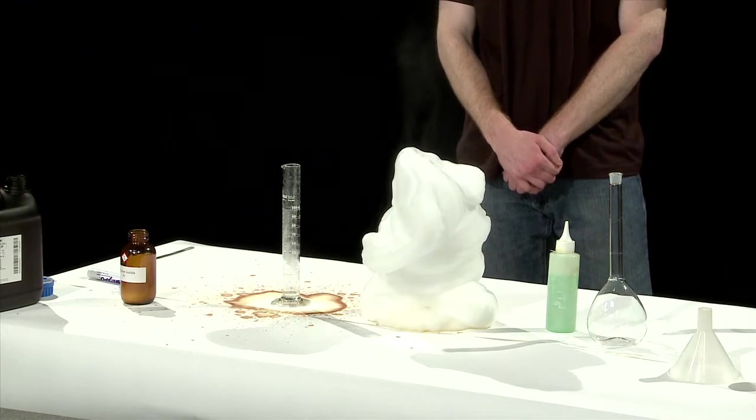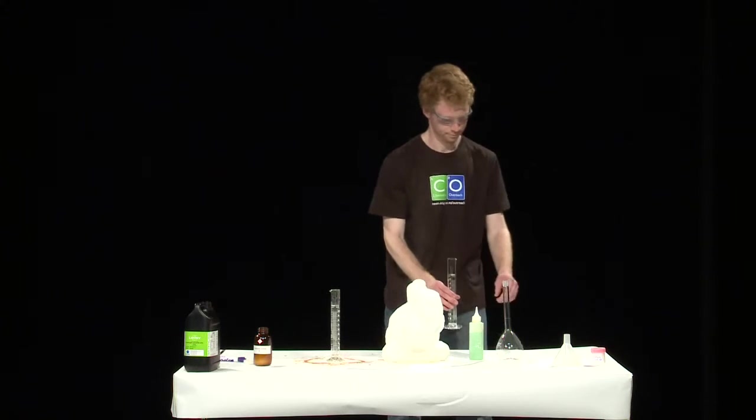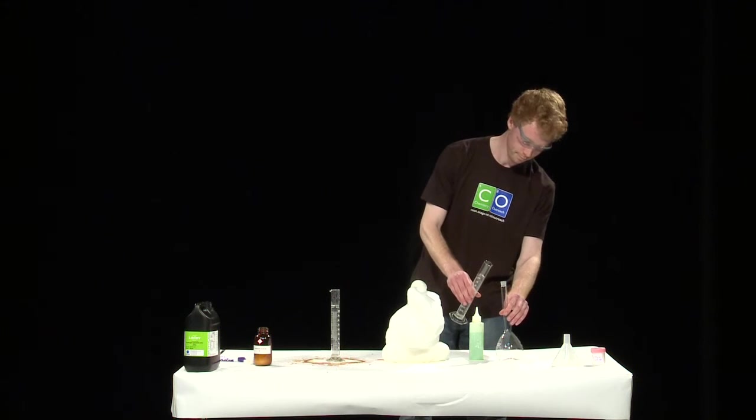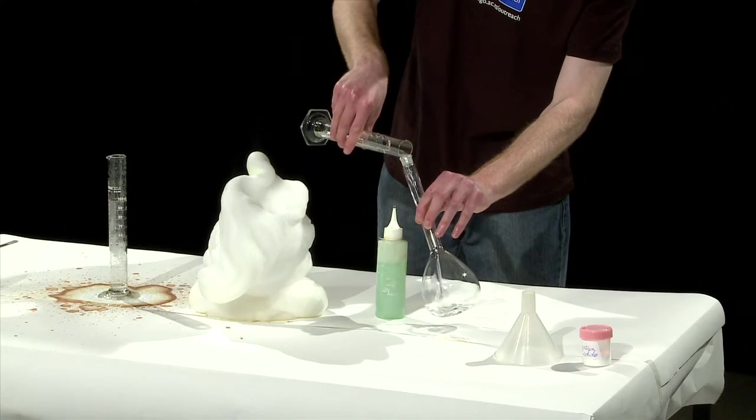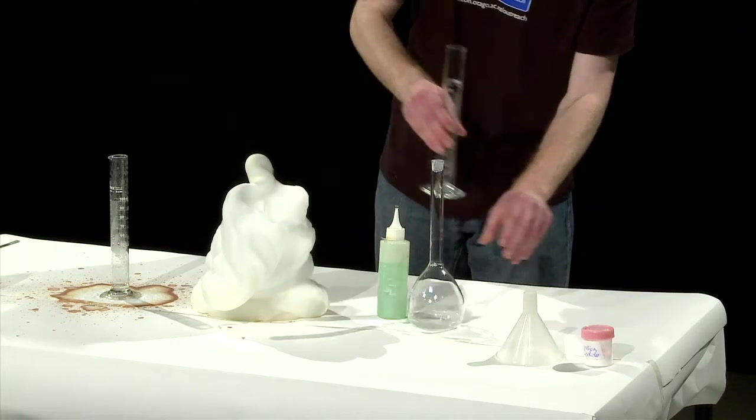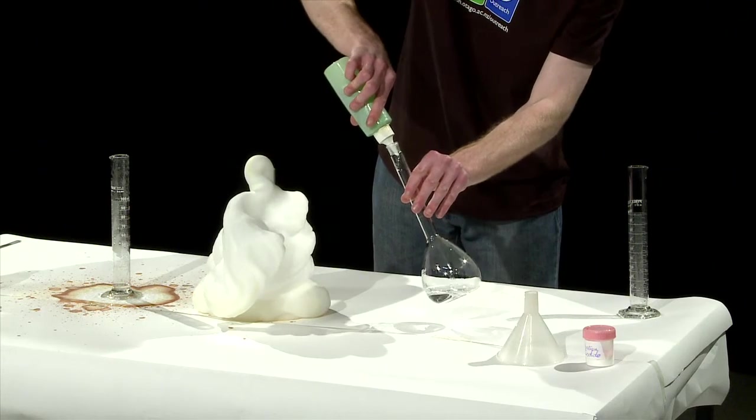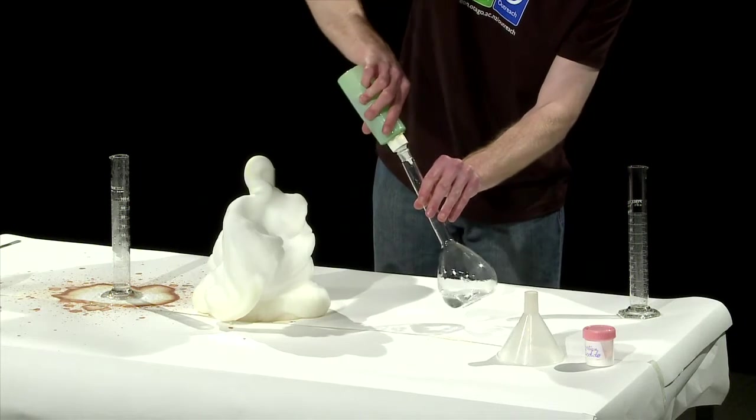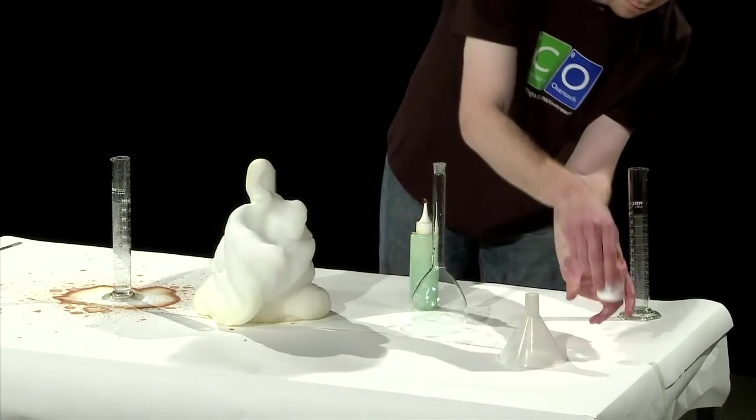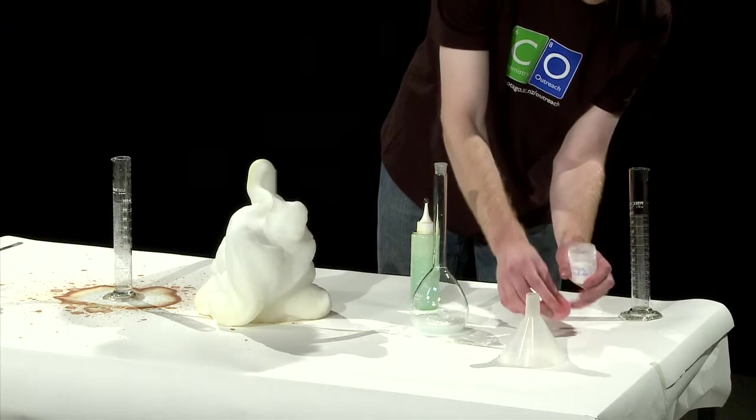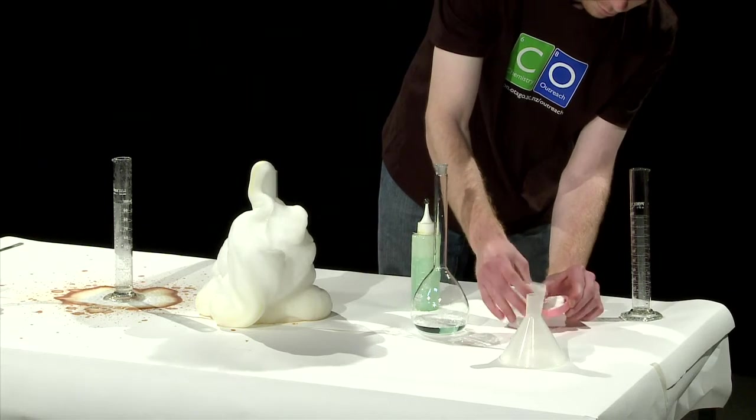But I think we can go one better, don't you? To really do this reaction in a spectacular fashion, do it in a volumetric flask. Once again we add the peroxide, small amount of dishwashing liquid, and finally, plenty of potassium iodide. Get ready to make the observations that you see.